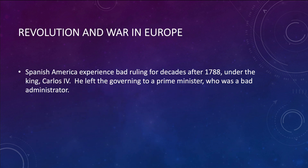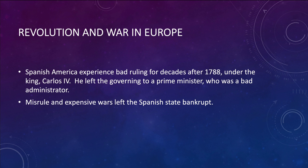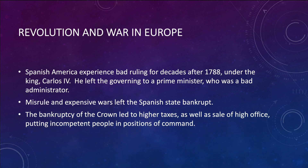Regarding revolution and war in Europe: Spanish America experienced bad ruling for decades after 1788 under King Carlos IV, who put a prime minister to govern for him, and this prime minister was a bad administrator. Carlos IV was interested in collecting clocks and hunting, and not at all in ruling. The misrule and expensive wars made the state go bankrupt, which led the crown to raise taxes and sell higher positions of command, resulting in many incompetent people in high office.